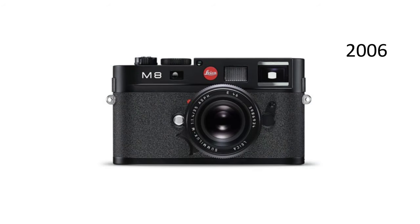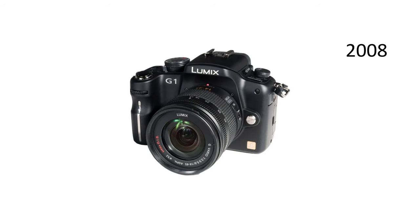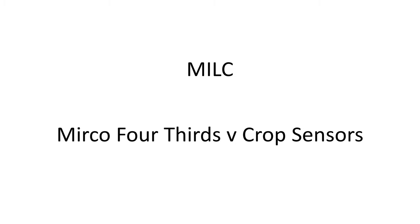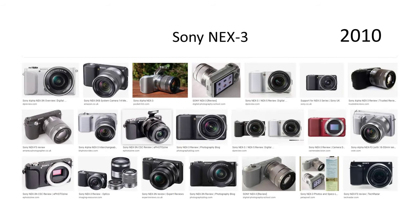Leica developed the M8 rangefinder camera in 2006, even more expensive than the Epson. The first really successful mass-market commercial mirrorless camera is generally considered to be the Panasonic Lumix DMC-G1, released in 2008 — also the first camera of the micro four-thirds system. The G1 had a 12.1 megapixel sensor and, unlike the Epson and Leica, had autofocus. It was also considerably cheaper. After 2008, the micro four-thirds system was developed further by Panasonic and Olympus, while Sony, Nikon, Canon, Fuji, and Samsung went down the crop sensor route. Sony was one of the most serious entrants into the crop sensor mirrorless market, launching the NEX-3 and NEX-5 compact mirrorless cameras in 2010, forerunners of the Alpha series.